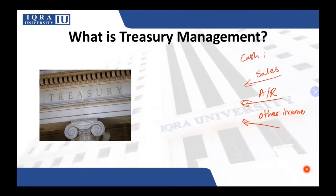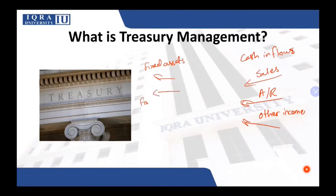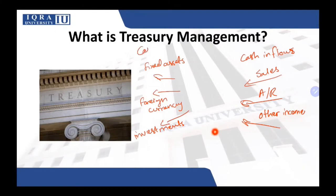Similarly, there are going to be cash outflows. The business will have to purchase new fixed assets, or if they are involved in importing or exporting, they might need foreign currency. They might simply want to invest extra cash elsewhere — buying bonds or shares of another company, or investing in a bank. Now, who is going to manage these cash inflows and outflows so that the right amount of cash is available at the right point in time? That is done by your treasury department.